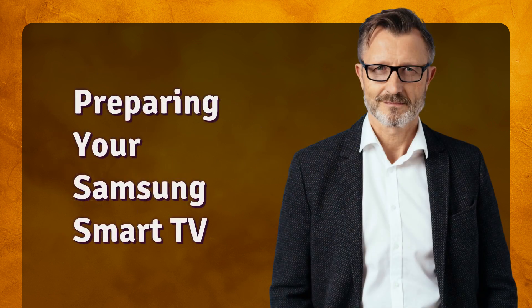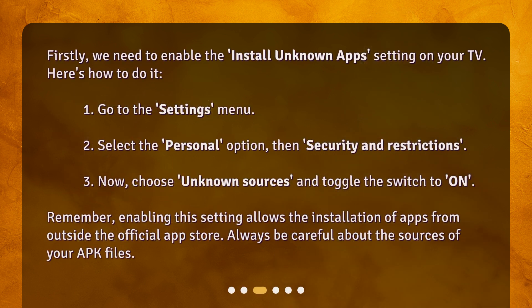Preparing your Samsung Smart TV. First, we need to enable the Install Unknown Apps setting on your TV. Here's how to do it: 1. Go to the Settings menu. 2. Select the Personal option, then Security and Restrictions. 3. Choose Unknown Sources and toggle the switch to On. Remember, enabling this setting allows the installation of apps from outside the official App Store. Always be careful about the sources of your APK files.